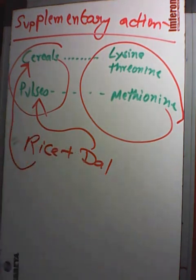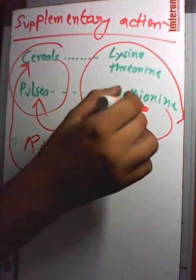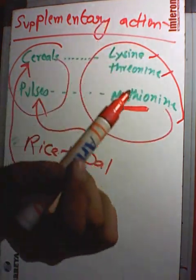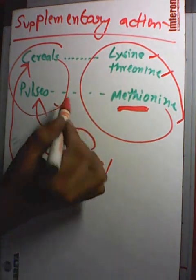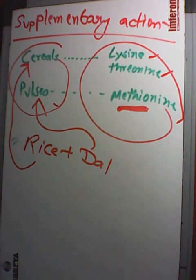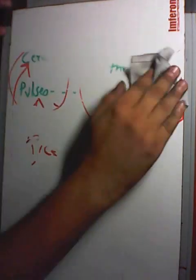The methionine which is deficient in dal, we get from the rice. So rice and dal is a very good combination to eat, and that is the reason why we tend to eat rice and dal together.